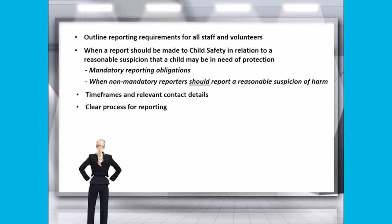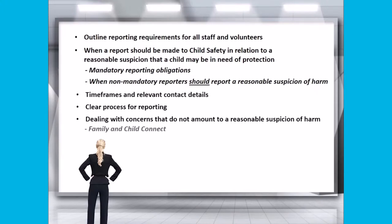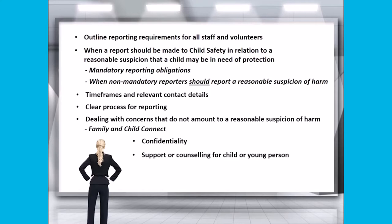You must also be sure to outline how to deal with concerns for a child that do not amount to a reasonable suspicion of harm by considering what support services could be offered to the family. For example, a Family and Child Connect service can provide information and advice about connecting families with support services and the circumstances in which a referral can and should be made. You should also ensure appropriate confidentiality is maintained in relation to the issues and any relevant documents. Also ensure that you consider any appropriate support or counselling which can be offered to the child or young person, and identify what supports are available for the person to whom the disclosure was made.